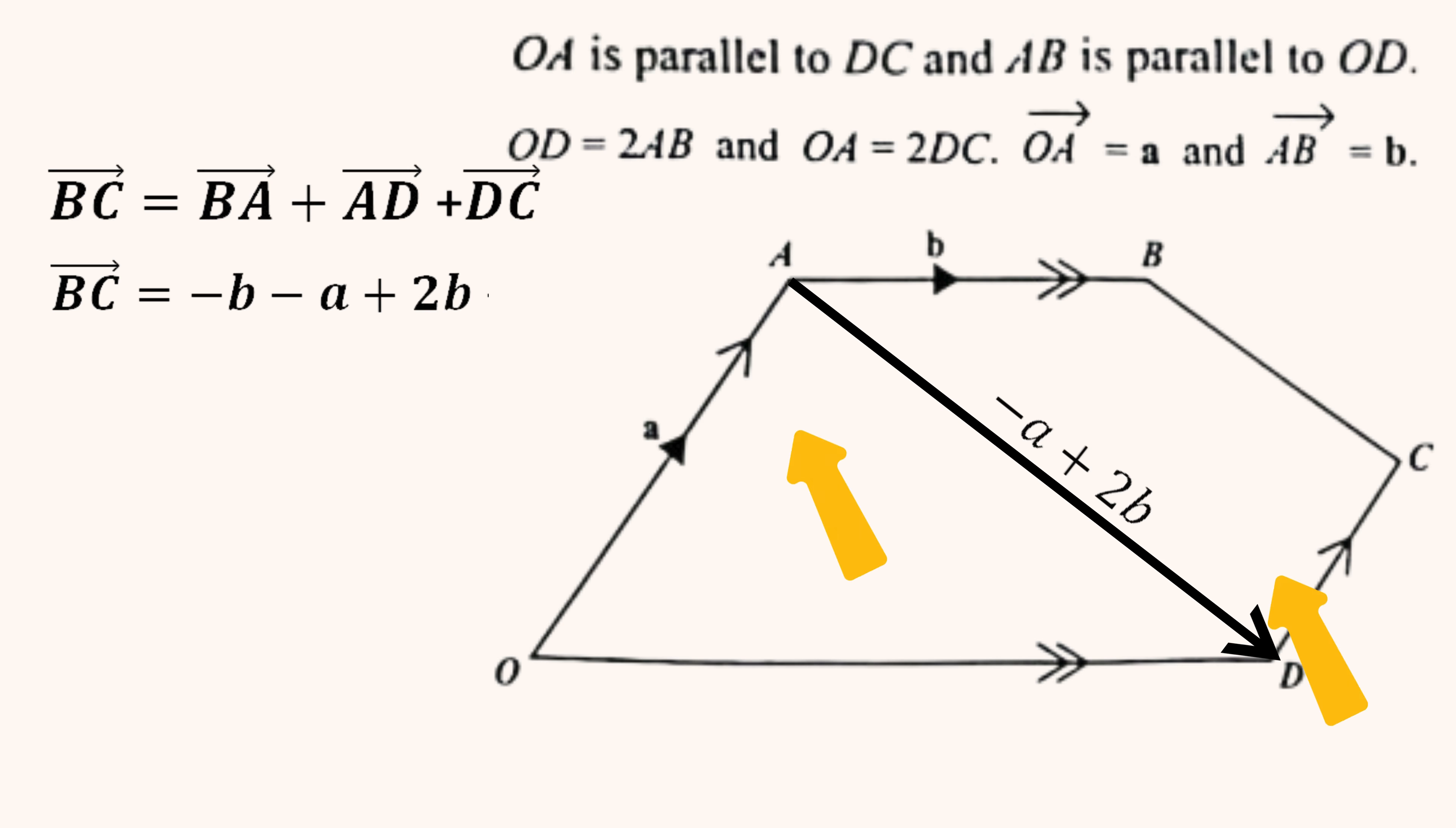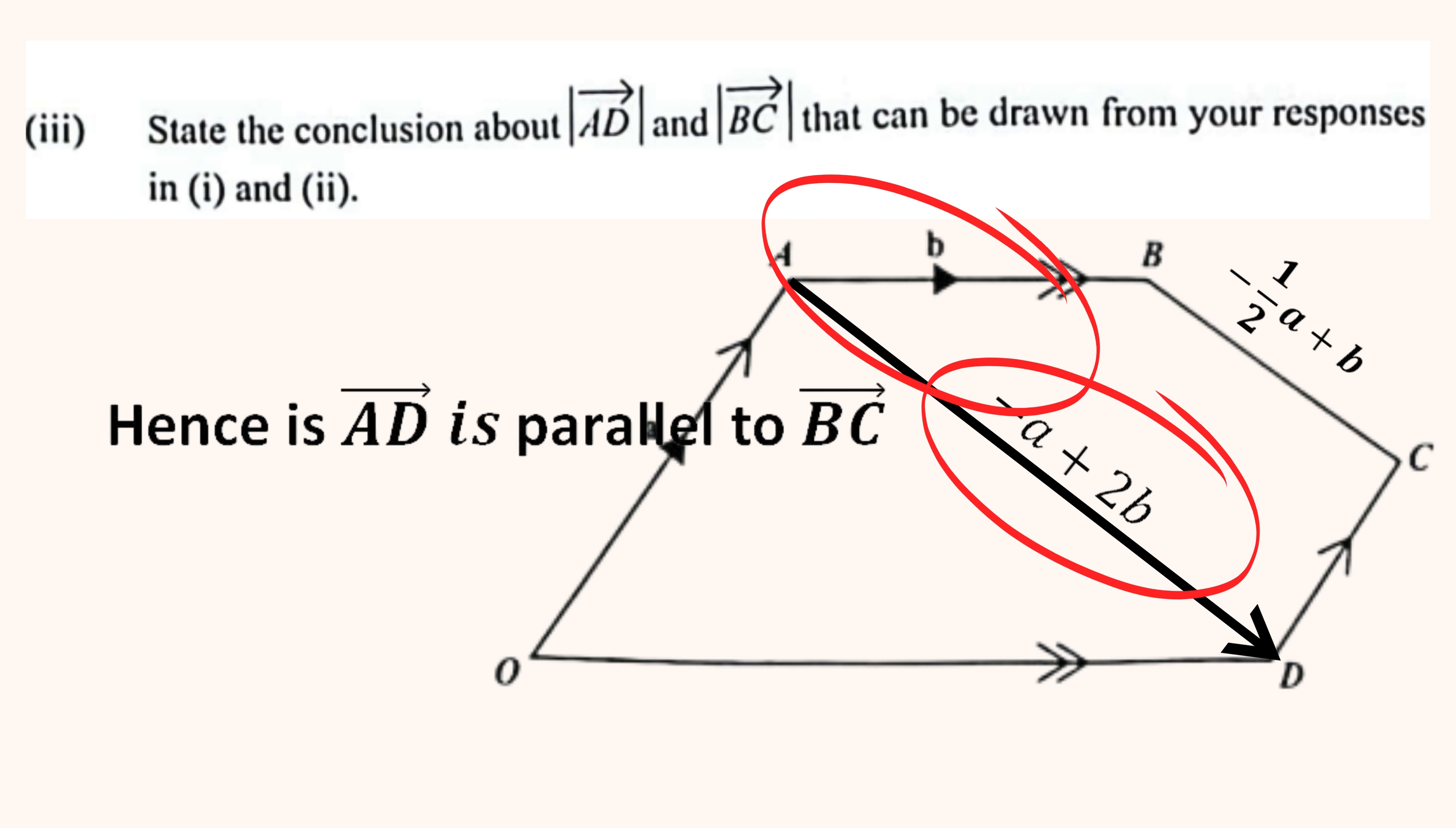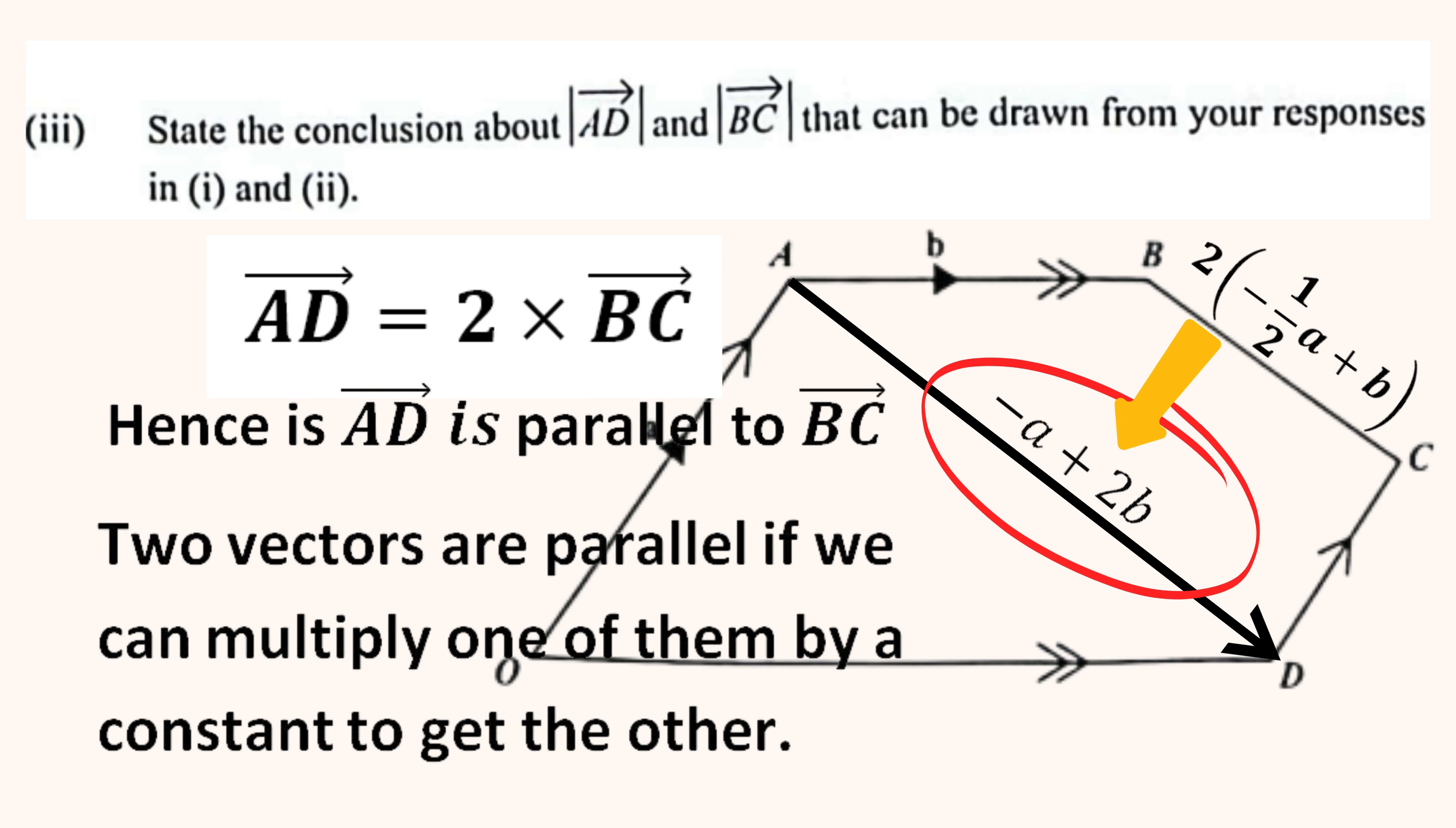Now OA is twice the length of DC, hence DC is half of OA. So vector DC is half of a. If we group like terms, we get vector BC equal minus half a plus b. Now compare vectors AD and BC. You'll notice that if you multiply vector BC by 2, you'll end up with vector AD. This means that both vectors are parallel to each other.